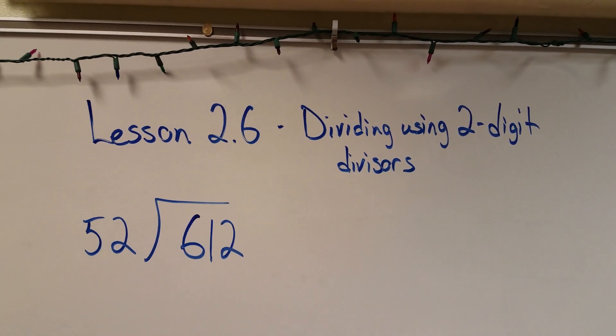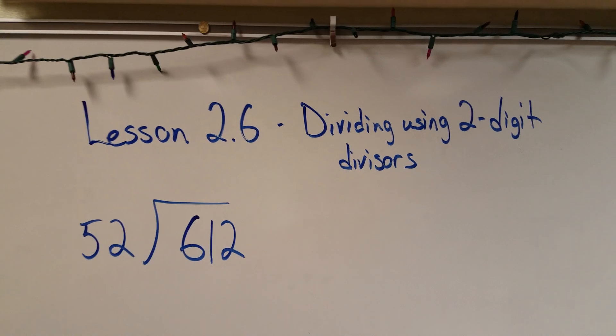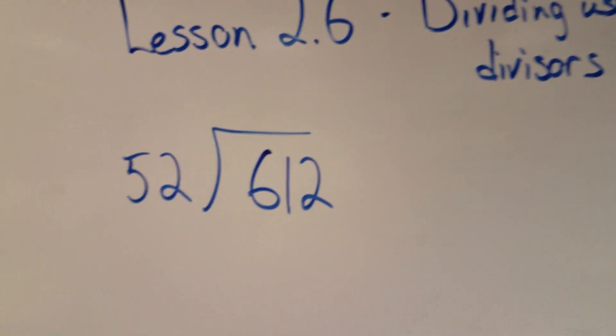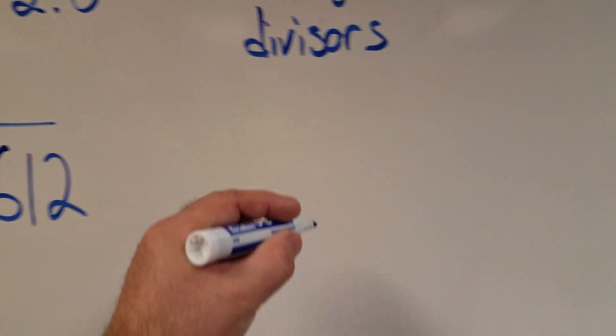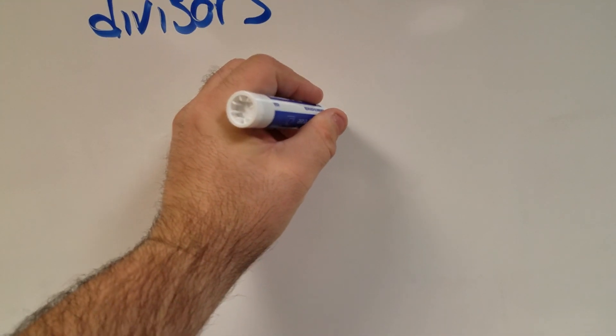All right, here we go. Lesson 2.6: dividing using two-digit divisors. So there's my problem: 612 divided by 52. The first thing I want to do is an estimate.